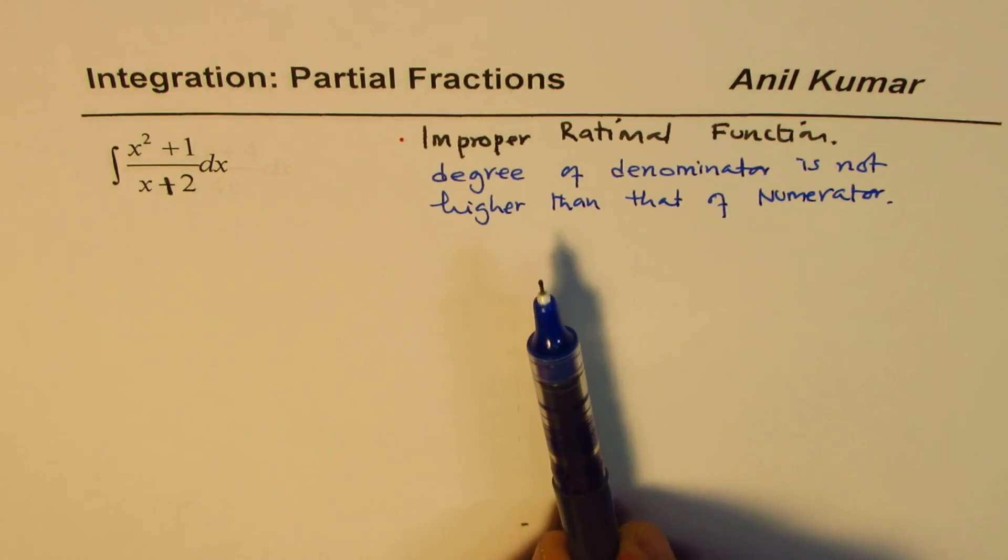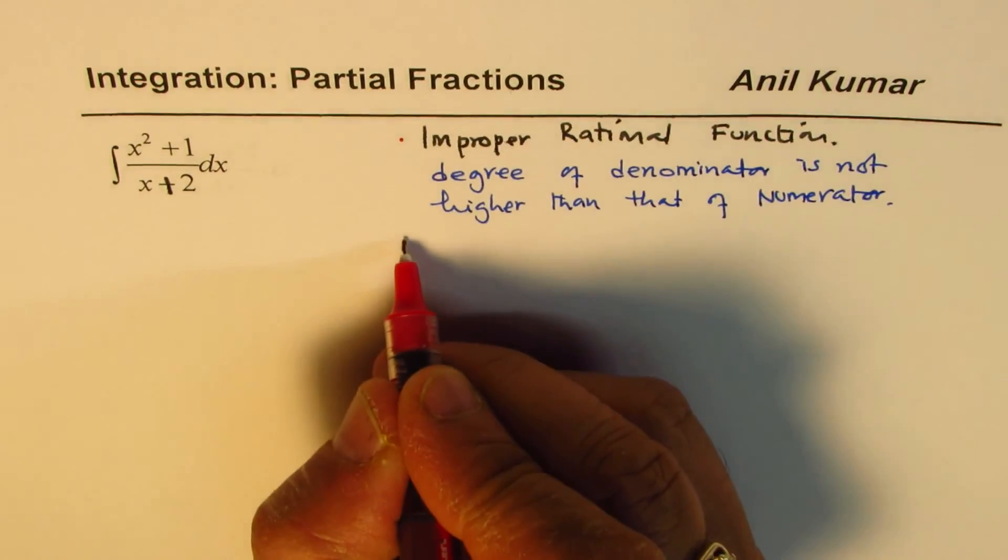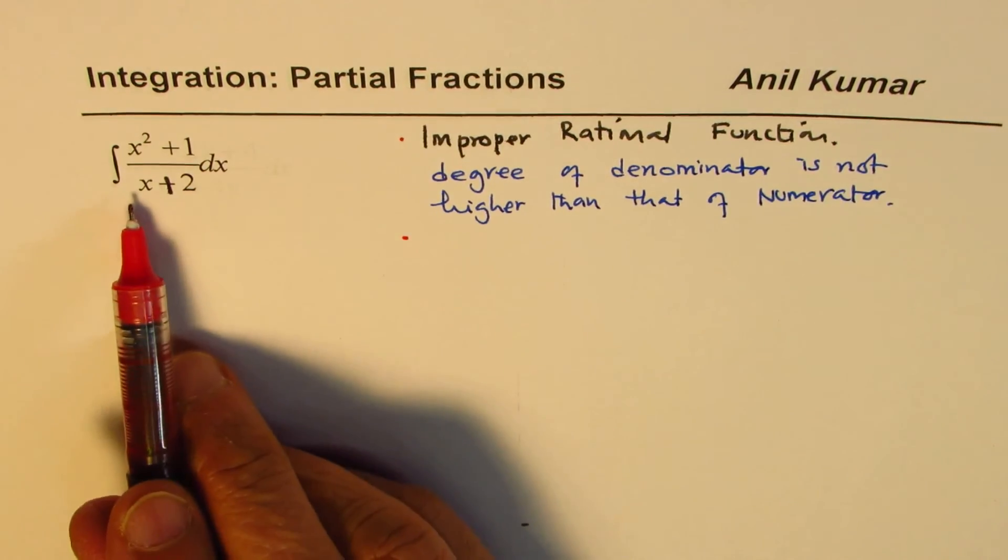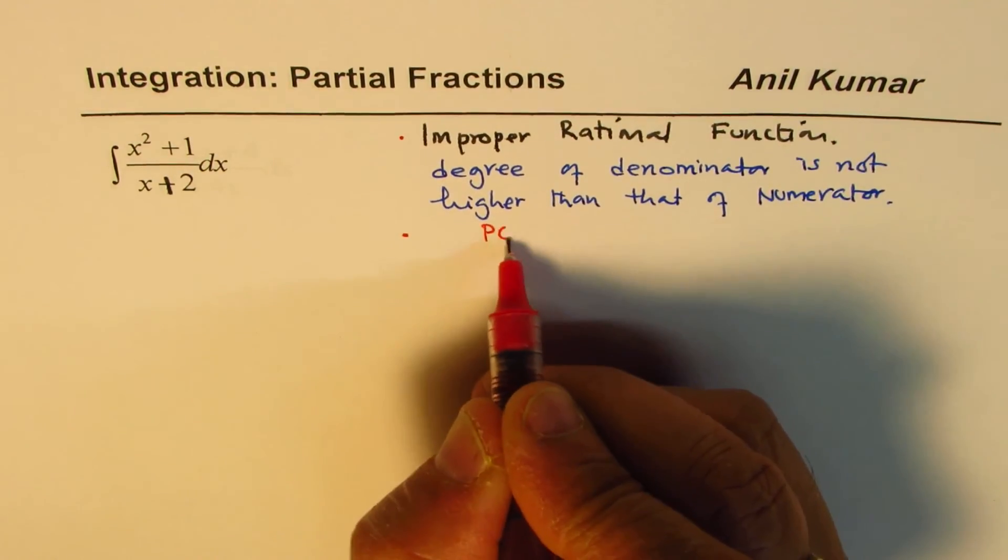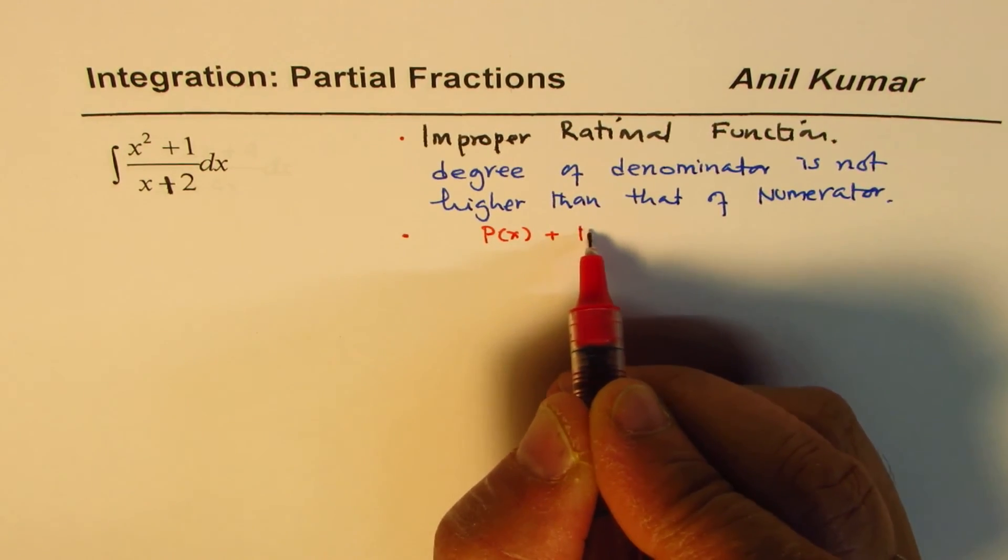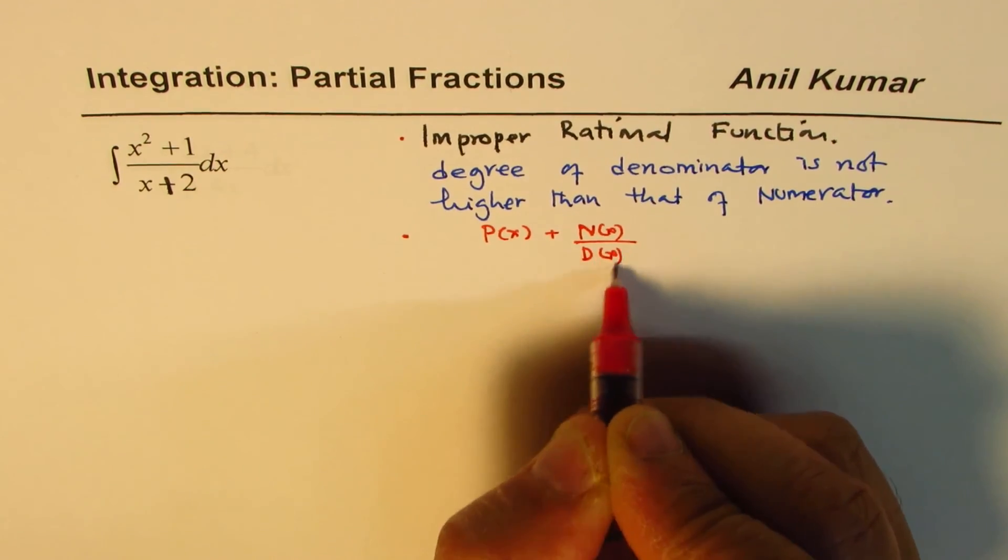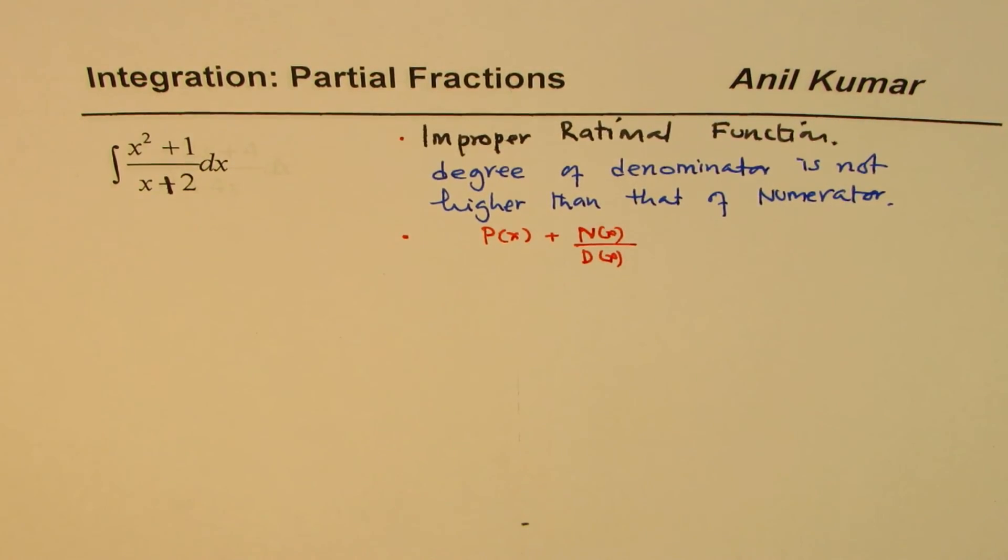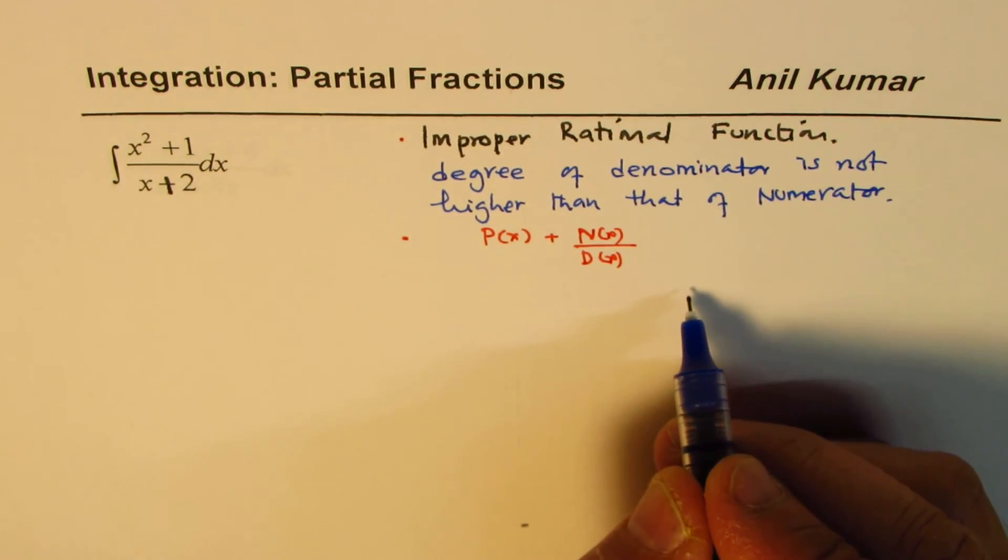If that is the case, the first step here is to write it as a combination of polynomial and rational function. So you should write this as a combination of P(x) plus numerator and denominator, something like this. To get it in this form, what we do is we divide the numerator by denominator. So let's follow that process. Let's go through it once.